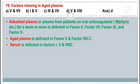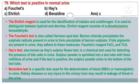Question number 78. Factors missing in aged plasma — the answer is option D: 5 and 8. Absorbed plasma, or plasma from patients on oral anticoagulants such as warfarin for a week or more, is deficient in factors 2, 7, 9, and 10. Serum is deficient in factors 1, 5, and 8C. Aged plasma is deficient in factors 5 and 8C.